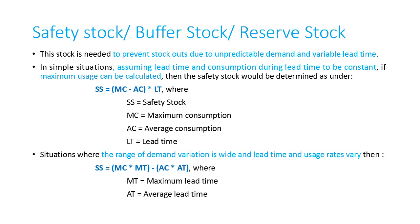Safety stock can be calculated assuming lead time and consumption during lead time are constant using the formula: (maximum consumption minus average consumption) multiplied by lead time. If they are variable, we use the formula: (maximum consumption × maximum lead time) minus (average consumption × average lead time).